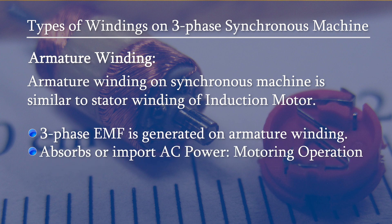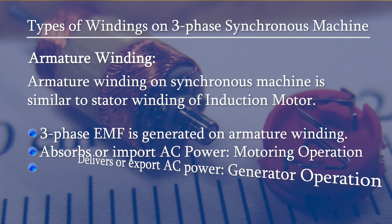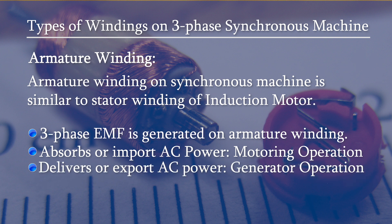The armature winding absorbs or imports AC power — when it absorbs AC power, it is the motoring operation. The armature winding can also deliver or export AC power — when it delivers AC power, then it is the generator operation.